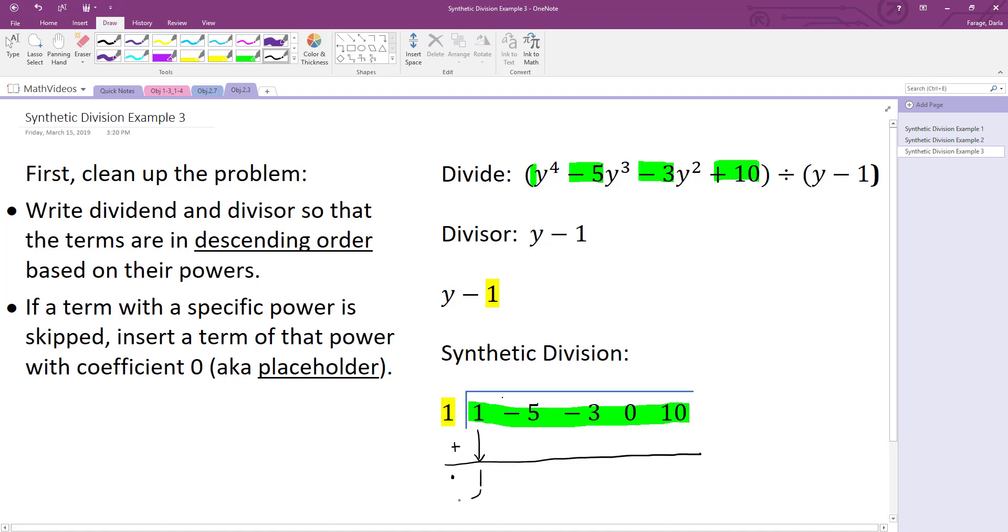Starting off, we have 1 times 1, we get 1. Combine negative 5 and 1, we get negative 4. Take that negative 4 and multiply it by our a. Negative 4 times 1 is negative 4.